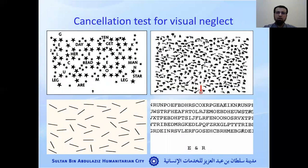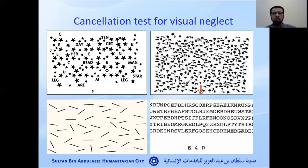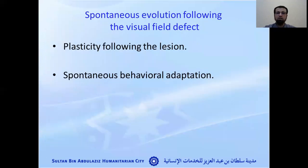One of the assessments used to identify visual neglect is the cancellation test — specifically, the star cancellation test. It includes small stars, large stars, and letters. The patient is asked to cancel or cross out all the small stars. If the patient misses four or more stars on either side, this is considered a presentation of visual neglect. So for visual field defect we use the confrontation test, and for visual neglect we use the star cancellation test.